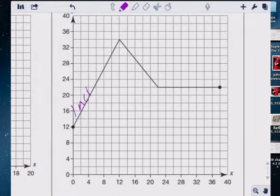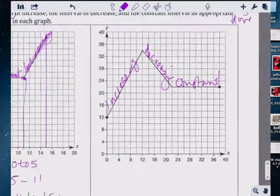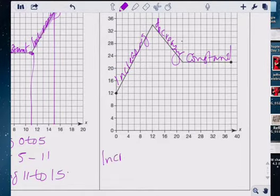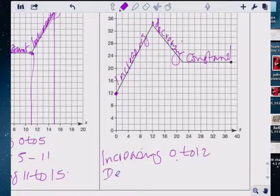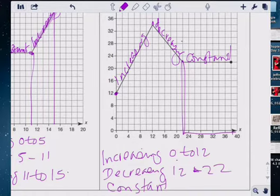This is increasing. See it's going up. Decreasing, constant. Okay. Increasing, it's from zero to twelve. Decreasing, it's from twelve to twenty-one. Once it's counting by two to twenty-two. Constant is from twenty-two to thirty-eight.